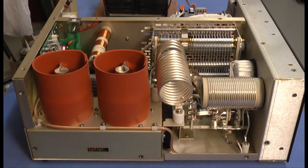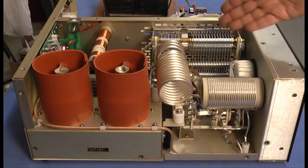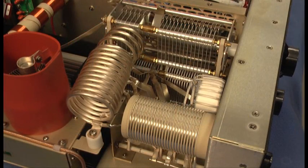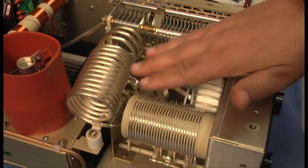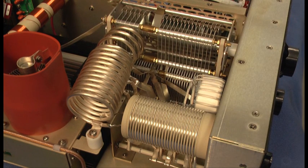On the RF side of the chassis, we find the two RF amplifier tubes and the tank circuit. The tank circuit of the amplifier consists of a coil and two capacitors, one for tune and one for load.